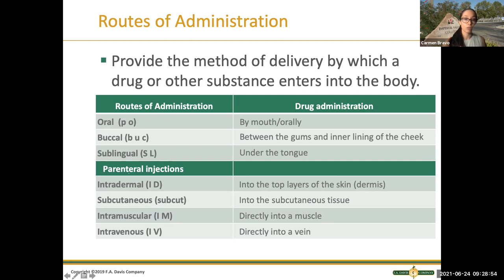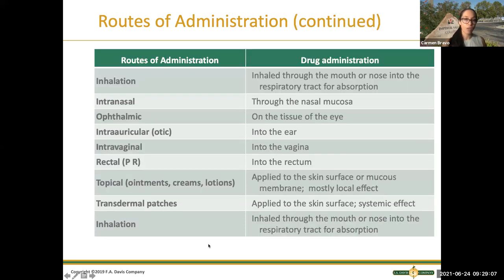You can see: oral, buccal, sublingual, and parenteral. Parenteral is anything administered directly into the system, like injections — subcutaneous, intramuscular, intravenous. We also have others like inhalation, breathing treatments, nasal, the eyes, the ears — there are different types of routes.